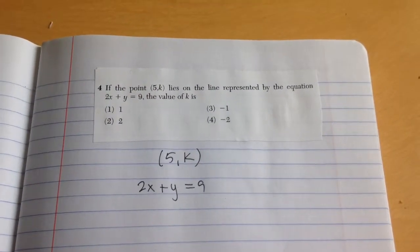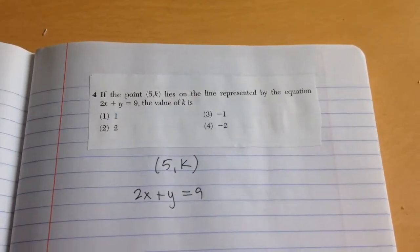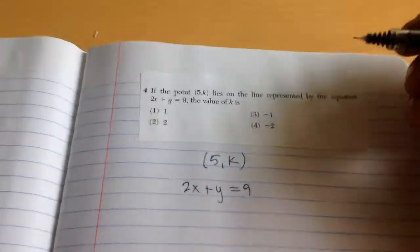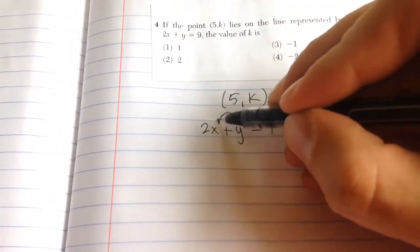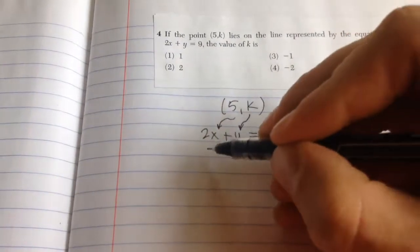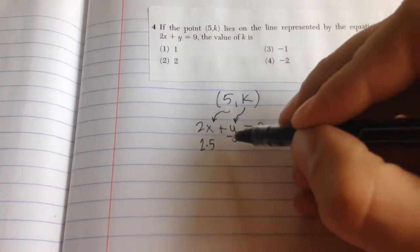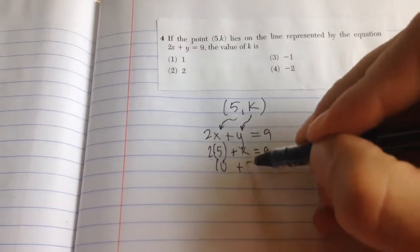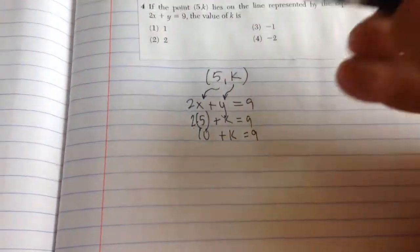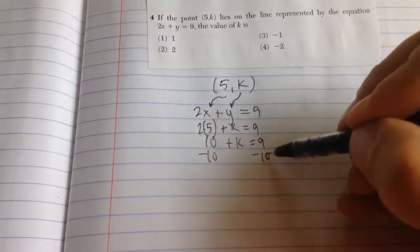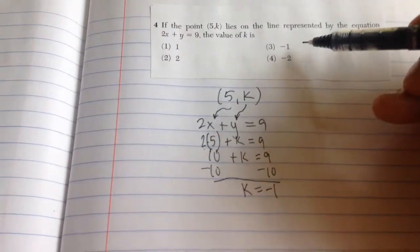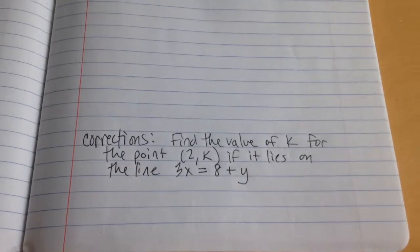Number 4, if the point (5, k) lies on the line represented by the equation 2x plus y equals 9, the value of k is. So what I'll do is substitute 5 in for x and k in for y. So my new equation reads 2 times 5 plus k equals 9. 2 times 5 is 10, plus k equals 9. Now we're just solving for k. Minus 10, you get k equals negative 1, choice 3. For corrections.